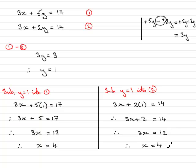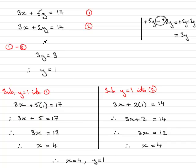When you finish a simultaneous equation, just simply summarise your answer. It's best to put your x value first, so: therefore, x equals 4 and y equals 1. And there you have a simultaneous equation where we used the process of elimination to eliminate the x's, because they were exactly the same.